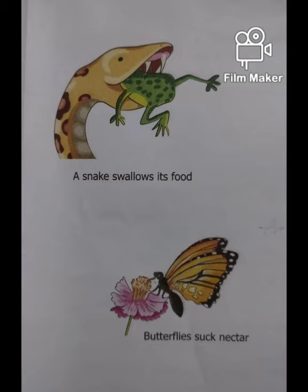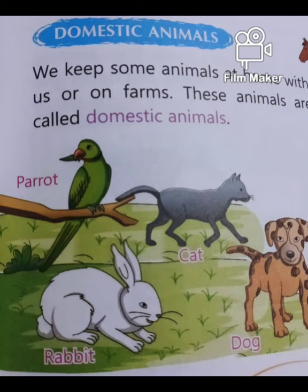Instead, butterflies have a long hollow tube-like structure, like a straw in their mouths, to suck their food. Butterflies are present in the flower to suck nectar. Now you will learn about domestic and pet animals.